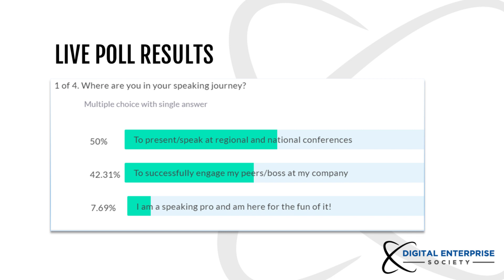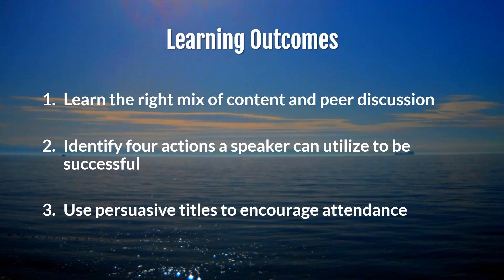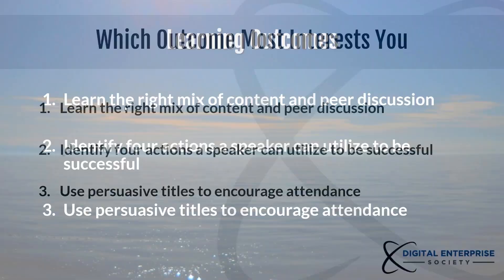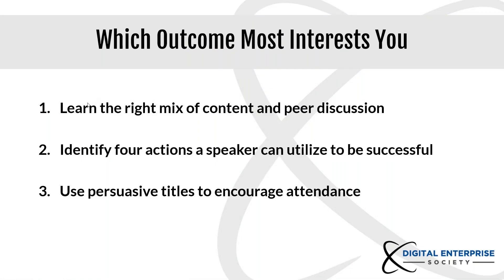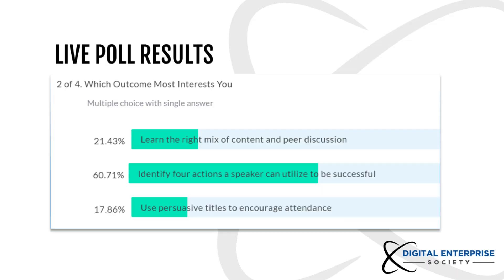Thank you for sharing that. That gives me an idea of where you all are on your speaking journey. We're going to head to our learning outcomes for today. There are really three: one is learning the right mix of content and peer discussion; the second is identifying four actions you can utilize to be a successful speaker; and the last is using persuasive titles to encourage attendee interest. We're going to do another poll to see which of these three objectives most interests you.